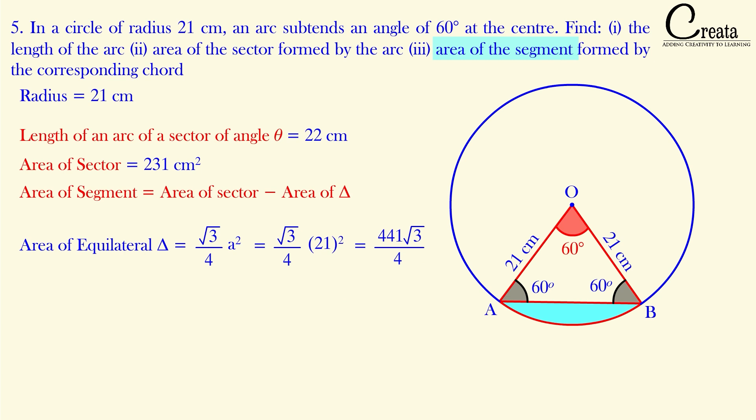Now we can find the area of the segment: area of sector minus area of triangle = 231 − 441√3/4 cm². That is the area of the segment formed by the chord. We have done all three parts of question number 5. So students, we have done with this lecture. Hope you enjoyed it. If so, like, subscribe, and share this lecture. Check the description for the PDF of the complete formula list and the link to various quizzes. Best of luck for the exam. Bye for now and have a great day.